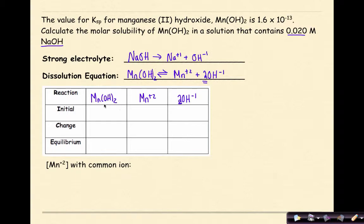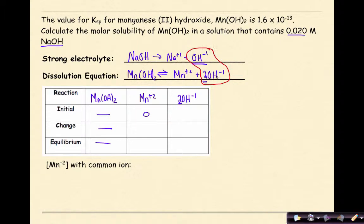Manganese 2-hydroxide is in the solid state, so we have no ICE table values for it. Initially, based on this reaction, the concentration of manganese ions is 0. Here's the key difference from previous problems: a strong electrolyte, sodium hydroxide, has been added. We don't care about the sodium — it's a spectator ion. The hydroxide ion is the common ion shared between both equations. So the initial concentration of OH⁻ is 0.02 molar from the sodium hydroxide, not zero.